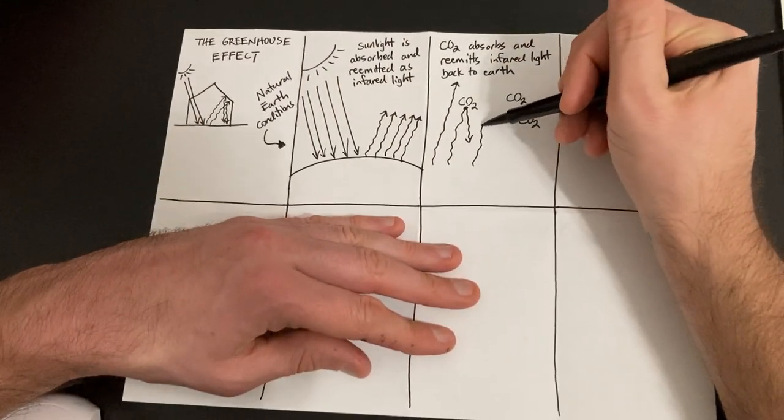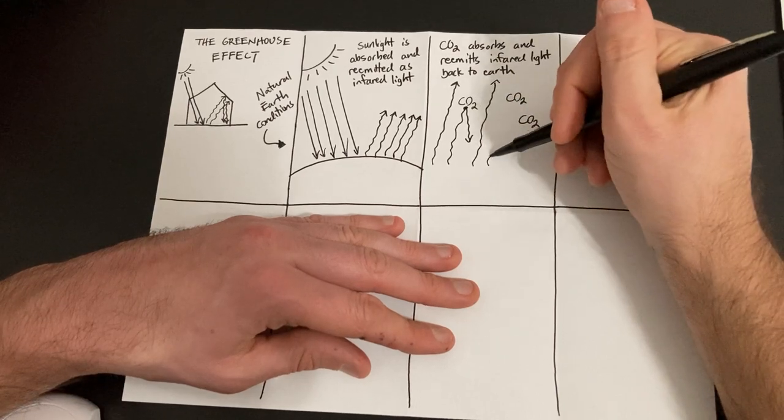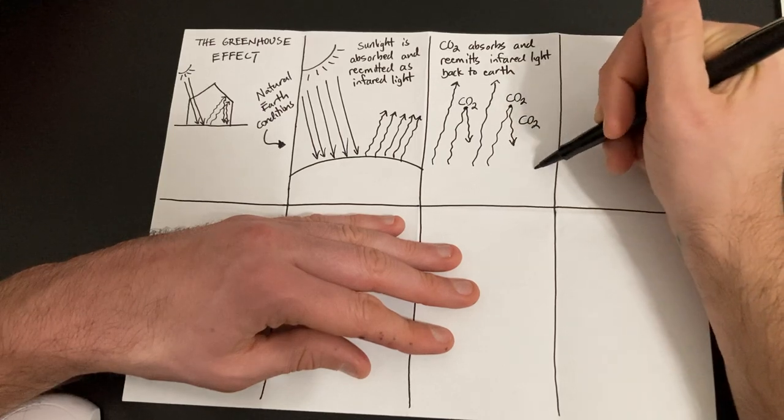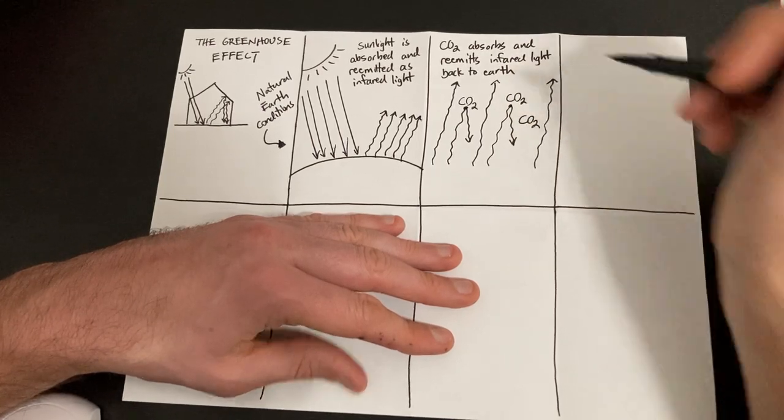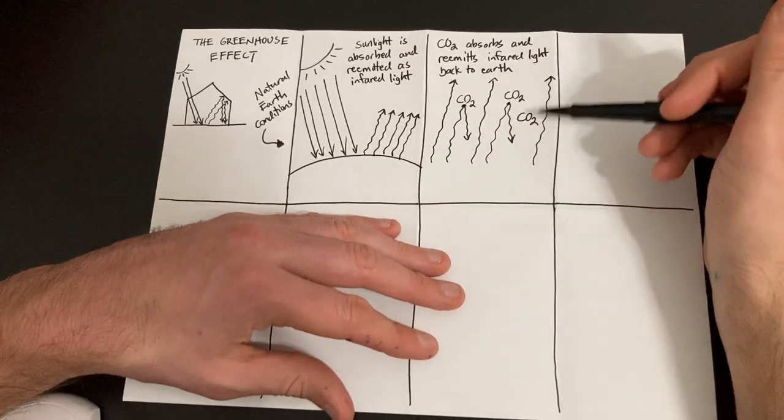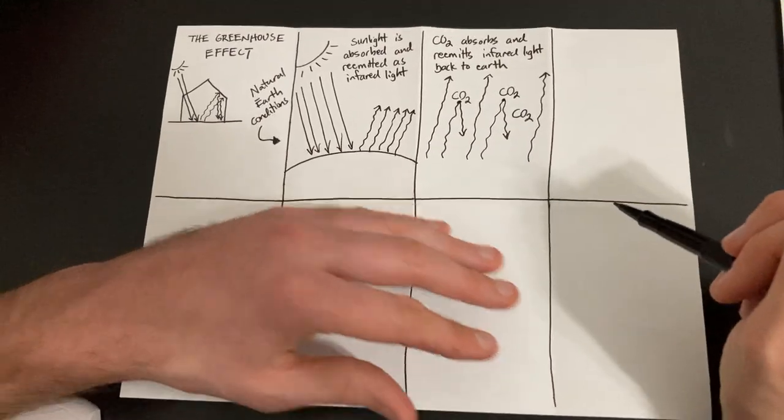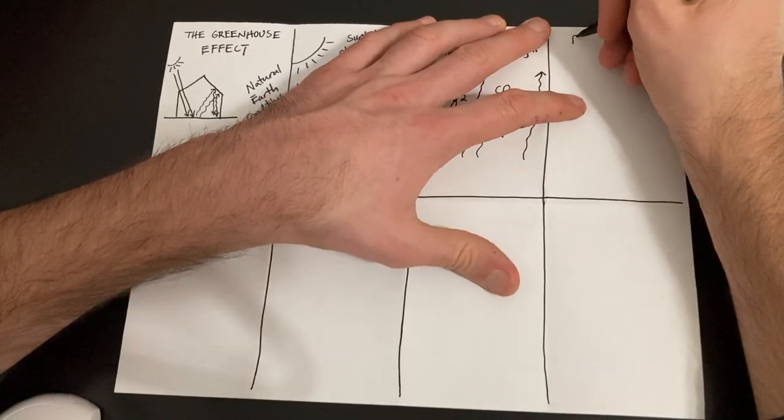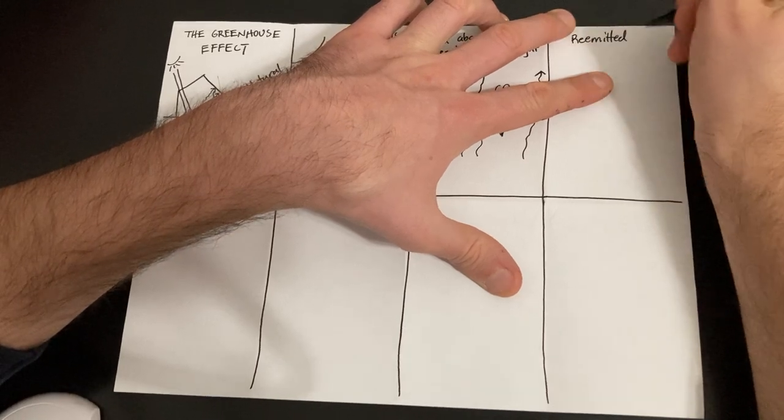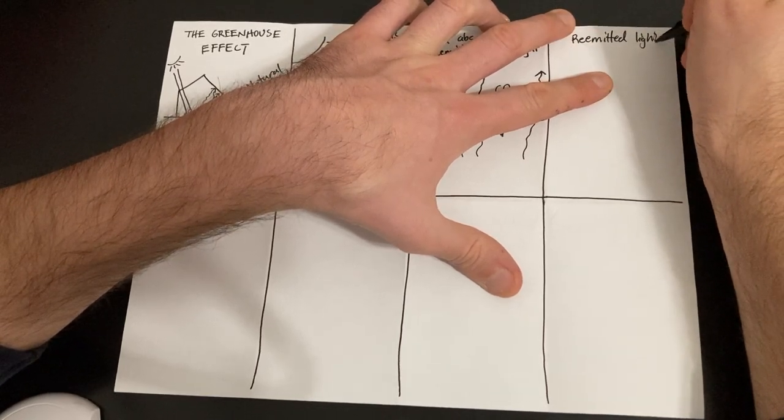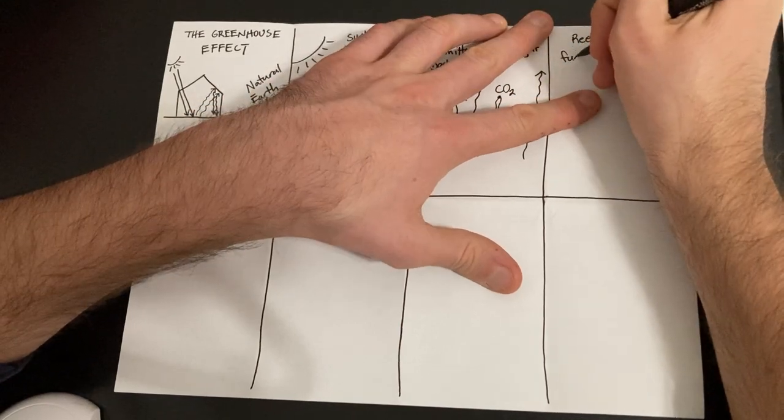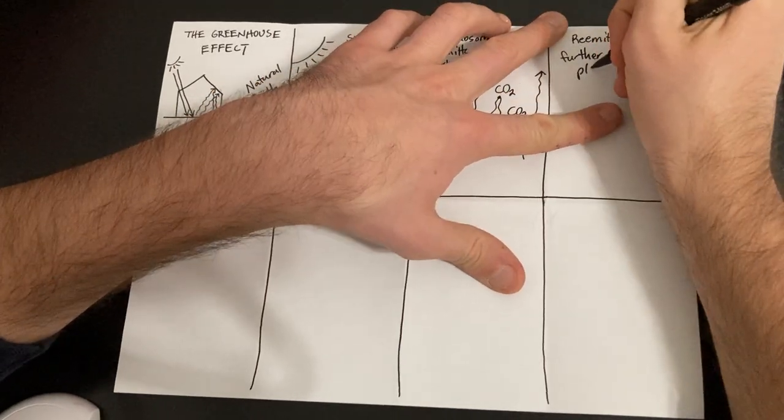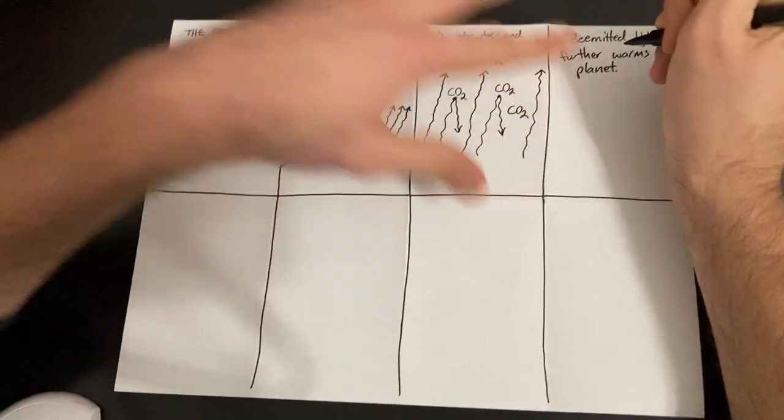Some of that light, again, is going to be able to get through. But some of it, again, is going to bounce into a CO2 molecule, get absorbed and bounce right back. And maybe I'll have another sun ray just be able to come through right here. So not all the light gets trapped by CO2, but some of it does. And this is really, really important because the re-emitted light further warms the planet or the Earth.